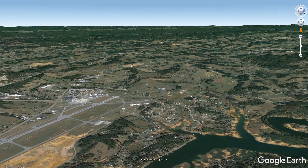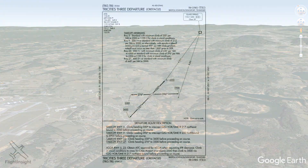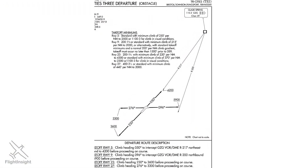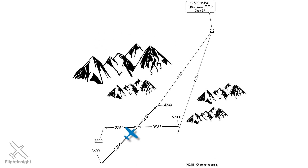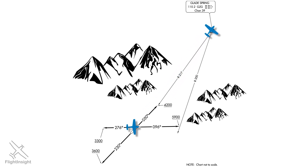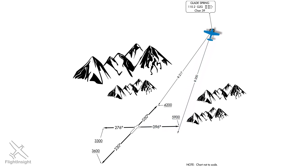Here at Bristol, Tennessee, in the mountains, the Tri-Cities 3 departure is used. This procedure is designed to allow aircraft to navigate to the north and east towards the Glade Spring VOR to avoid the mountains in the area. ODPs are very carefully designed by the FAA using the TERPS process. If you follow the route, restrictions, and minimum climb gradients of an ODP, you're guaranteed the obstacle clearance they provide.